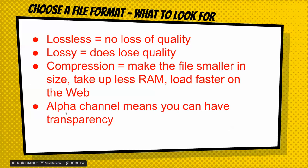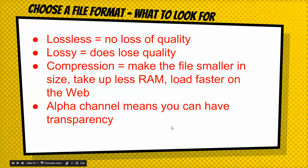An alpha channel means that you can have transparency. So certain images — if there's not a picture there, it's white, whereas if there's an alpha channel, you can make things transparent, which is nice.